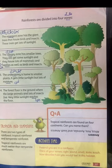The second type is the canopy zone. The trees here are smaller than emergent size. The third type is the understory, which receives less sunlight than the layers above.